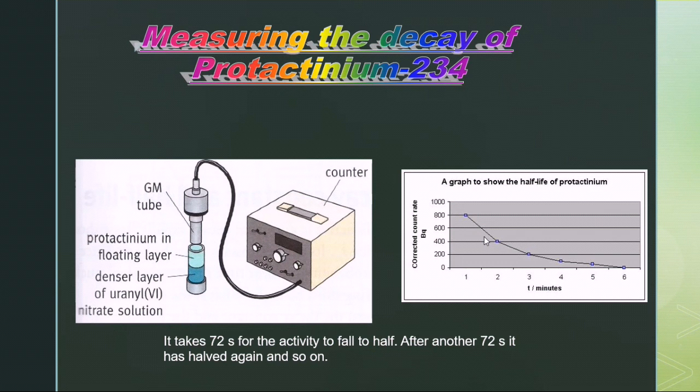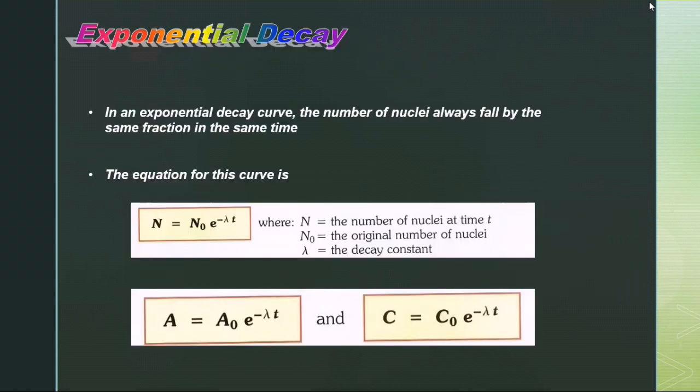As it takes a time t½ for the number of nuclei to fall from N₀ to N₀/2, we see that it takes the same time for the number of undecayed nuclei to fall from N₀/2 to N₀/4 and from N₀/4 to N₀/8, where N₀ is the original number of nuclei. This means in an exponential decay curve, the number of nuclei always fall by the same fraction in the same time.